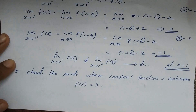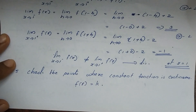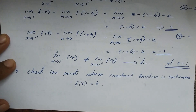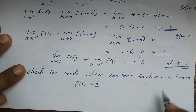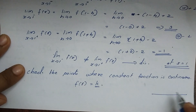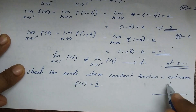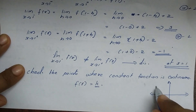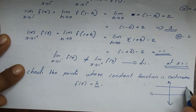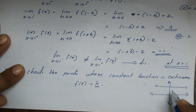Next question: check the points where the constant function is continuous. f(x) = k, where k is a constant. This is the constant function graph, where the function value is always k regardless of x.